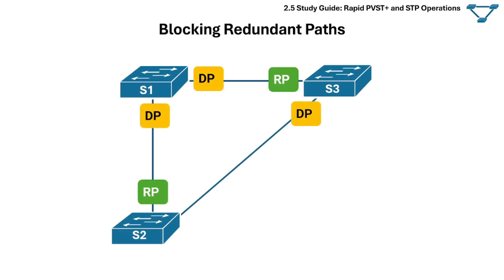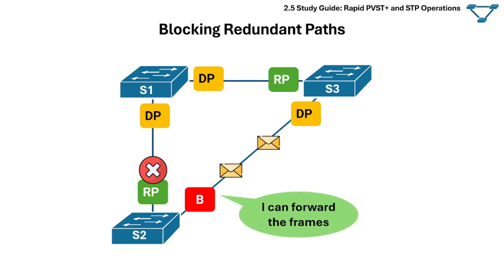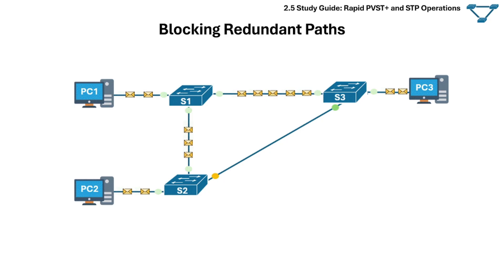Next is blocking redundant paths. Any remaining ports that are not root ports or designated ports are placed in a blocking state. Blocking ports do not forward user data but still listen for BPDUs. A blocking port is also an alternative port — if the main path fails, the alternate port can quickly take over and start forwarding frames. To sum it all up, even though all three switches are still physically connected in a triangle, STP has temporarily blocked the link between switch 2 and switch 3, preventing a loop while keeping the network fully connected.